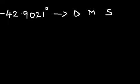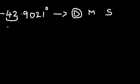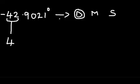So, to convert to degrees, we are going to take the whole number part of this decimal number, which is 42, and make it the degree conversion — as 42 degrees.